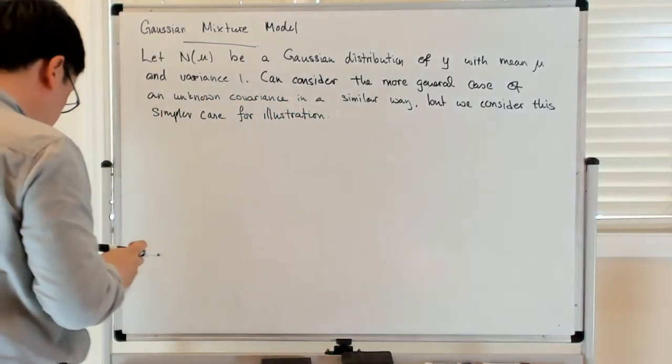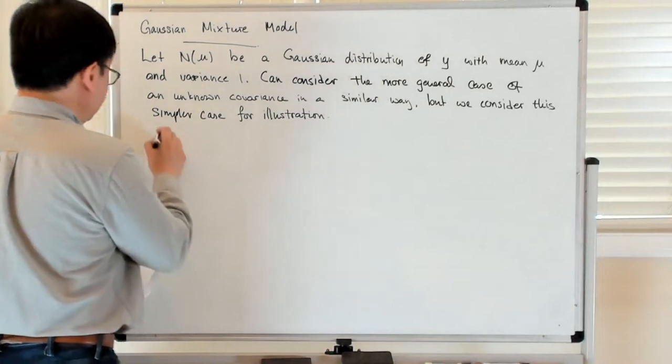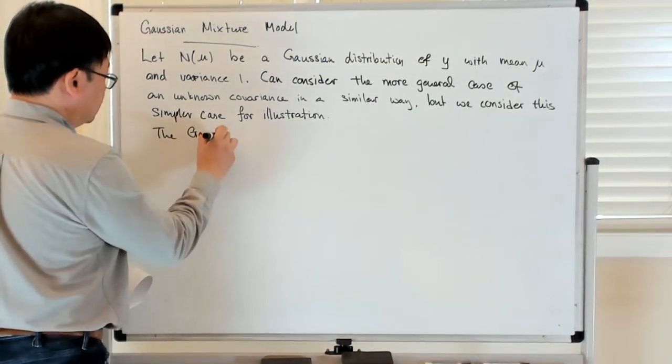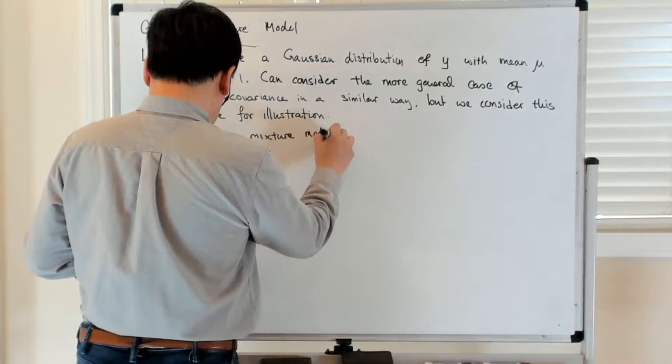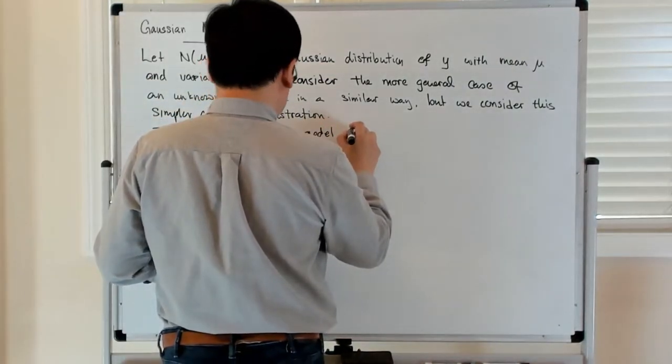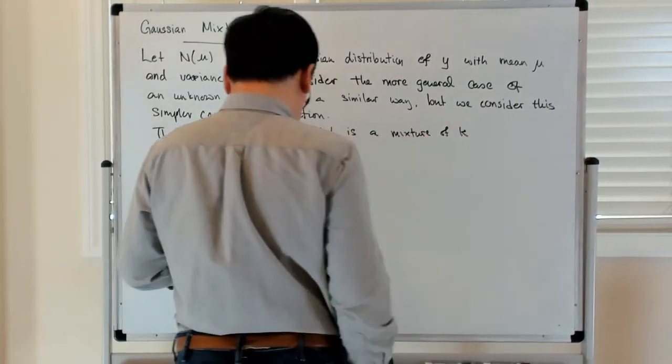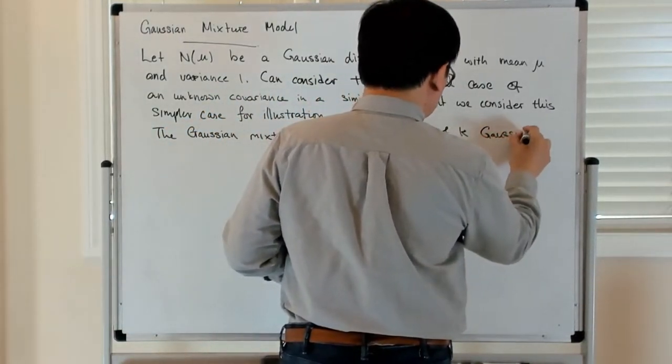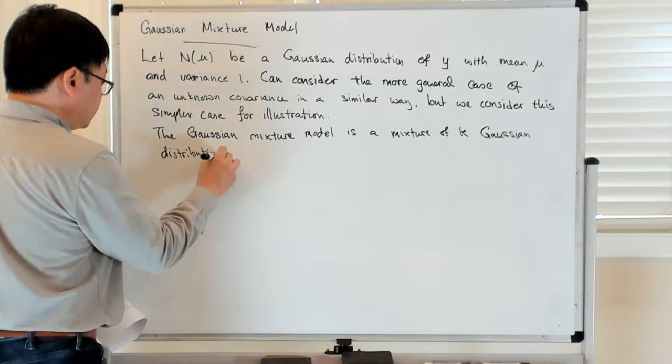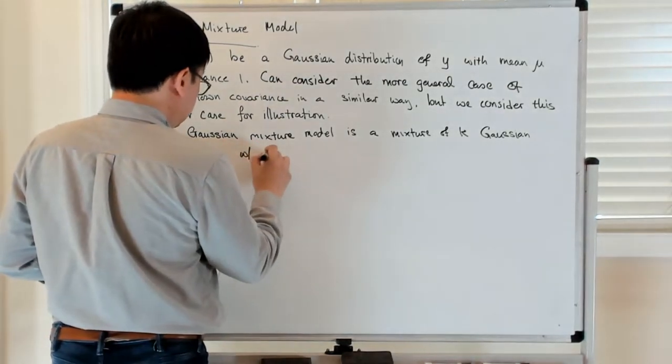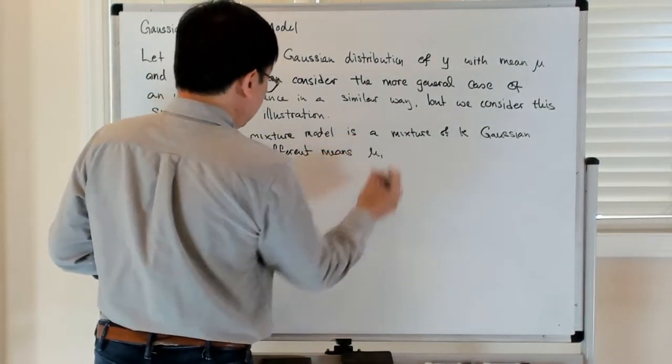So then you want to take a Gaussian mixture. The Gaussian mixture model is a mixture of k Gaussian distributions with different means. Let's call that μ1, μ2 to μk.